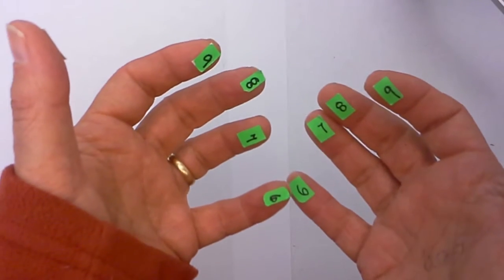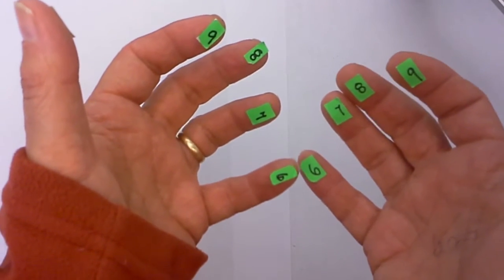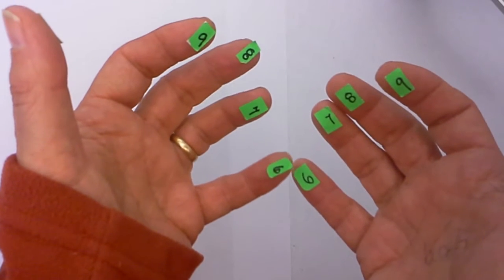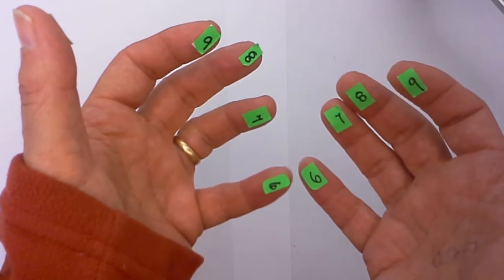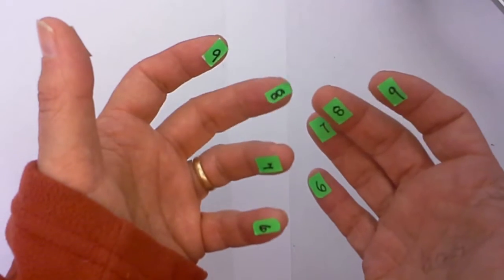First you will notice that I have my hands numbered. Starting at the pinky, each side is the same - the pinky represents 6, then 7, 8, 9, and your thumb is 10.